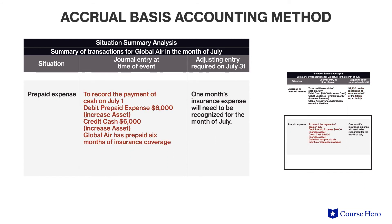On July 1st, Global Air pays $6,000 as a prepaid expense for insurance coverage for the six-month period from July through December. At the end of the fiscal year, July 31st, the adjusting entry for the prepaid expense will be for one month's insurance. Therefore, one month of insurance will be a recognized expense, while five months of insurance will remain a prepaid expense, which is a current asset.